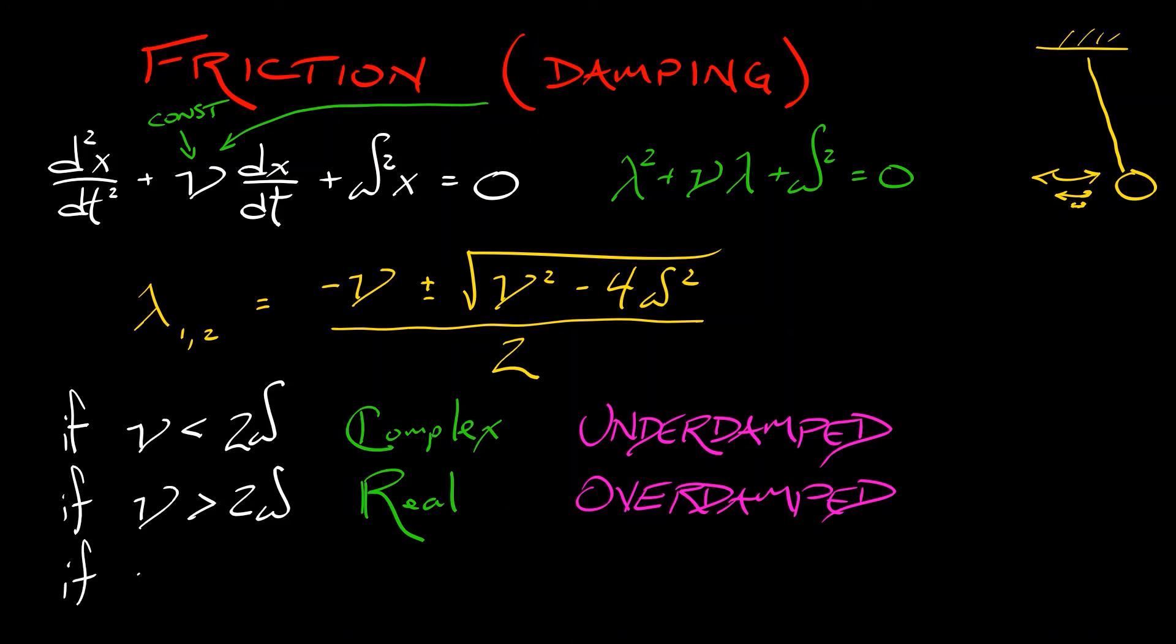Now, of course, there's a boundary case between these two. If the damping nu is precisely equal to twice omega, then the discriminant in this quadratic formula vanishes, and you have repeated real roots. You get minus nu over 2.